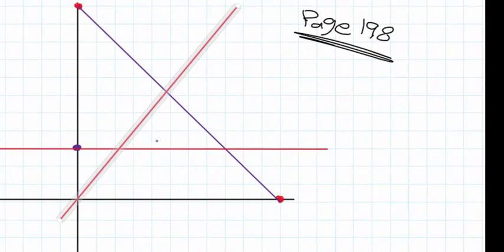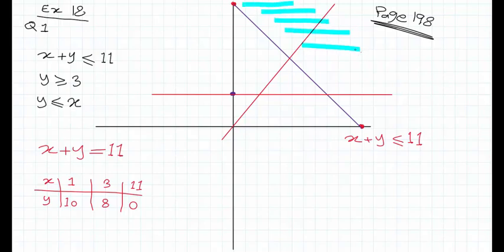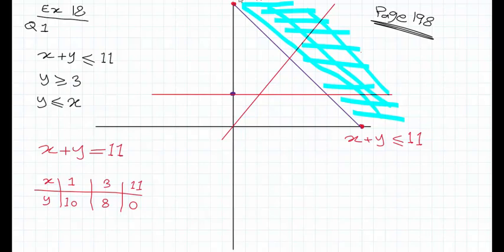How can we decide where the solution region is — where we can find reliable answers? Look at the first one: the purple graph is for X plus Y less than or equal to 11. On which side is X plus Y less than 11? Definitely on this side, because as we go inward, the X and Y values get smaller. So we shade the unwanted side — the shaded side is always the rejected one.